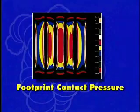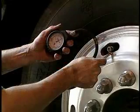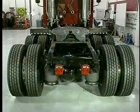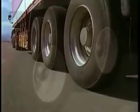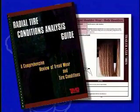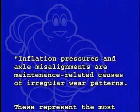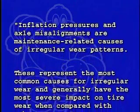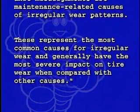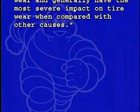The footprint shape is ultimately formed by a combination of several factors, including the tire's design, the effect of load and inflation, the mechanical influences created by the vehicle, and the road's surface. All of these factors act together to determine the type of wear your tire will exhibit. As summarized by the Maintenance Council, inflation pressures and axle misalignments are maintenance-related causes of irregular wear patterns and represent the most common causes for irregular wear, generally having the most severe impact on tire wear when compared with other causes.